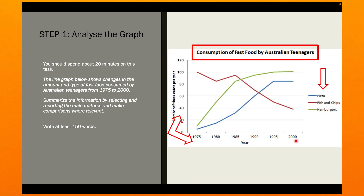What does this tell us? It tells us that the years are in the past, which means we're going to use past simple tense, because all of this happened in the past — 1975 to 2000. This is very important. Before you start writing your report, make sure you know what tense you need to use. Once you learn to do this, it'll literally take no more than 30 seconds to study and understand the graph, but I do encourage you to always spend some time doing this.